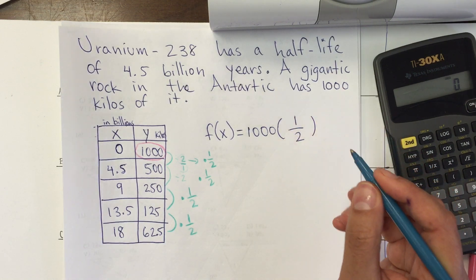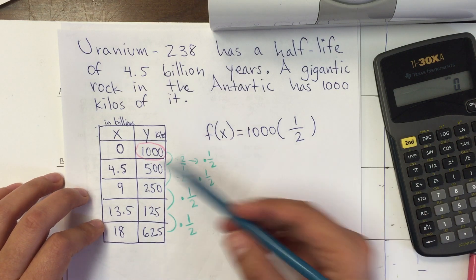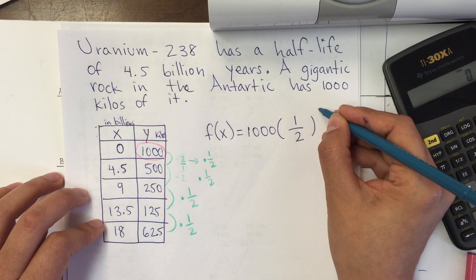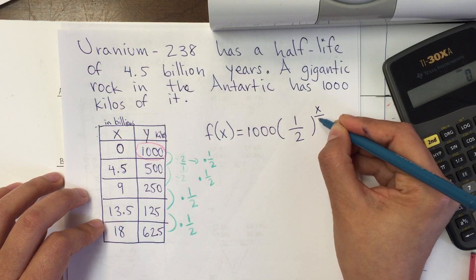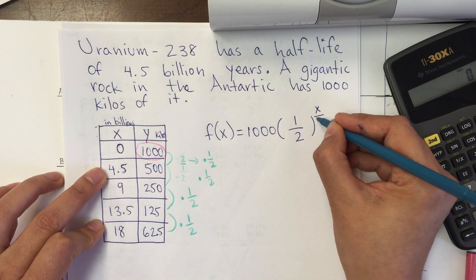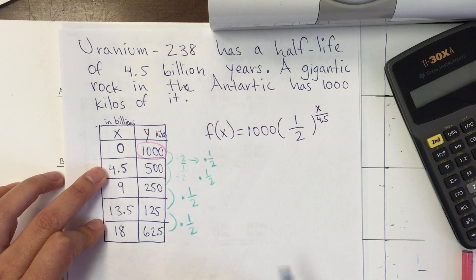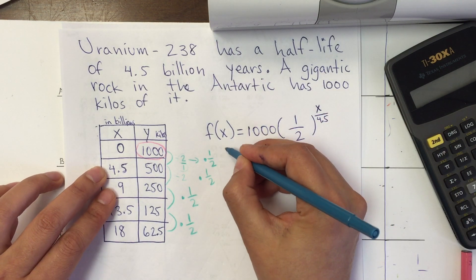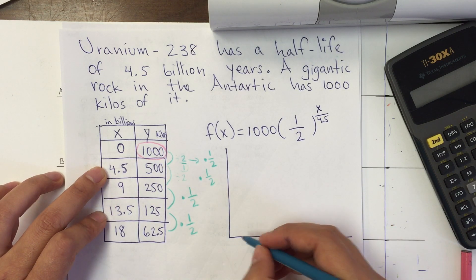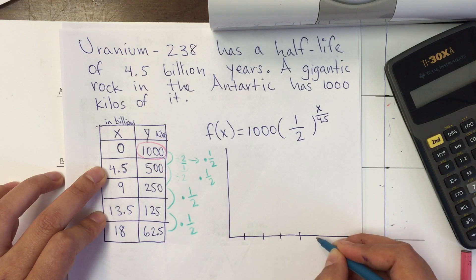What is the exponent in the function? It's going to be the input X over the cycle, which is every 4.5 billion years. That will be my function. If we're asked to sketch the graph, this is how it would look — I put my X axis here.